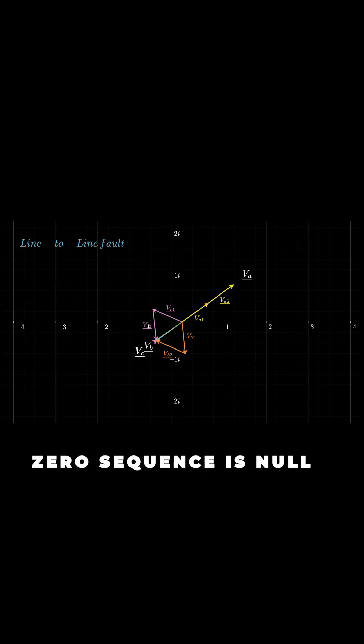This is because it is proportional to the current flowing through the neutral line. But in this case, since no conductor is in contact with the ground, the neutral voltage does not rise.